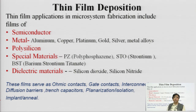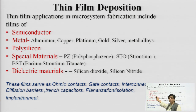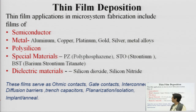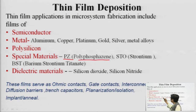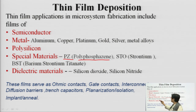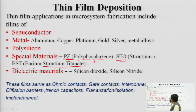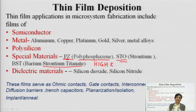Another material is polysilicon. Until the 1970s it was used as a gate material, after which it was replaced. Polycrystalline silicon has totally different properties compared to bulk silicon, so it is also explored in device fabrication. Third are special materials — polyphosphazine, used for super capacitors and trench capacitors, and strontium or barium strontium titanate, which are high-k or high dielectric constant materials used for nanoscale device gate contacts.